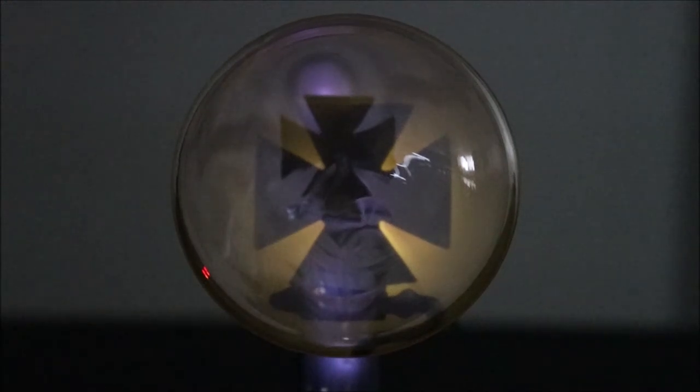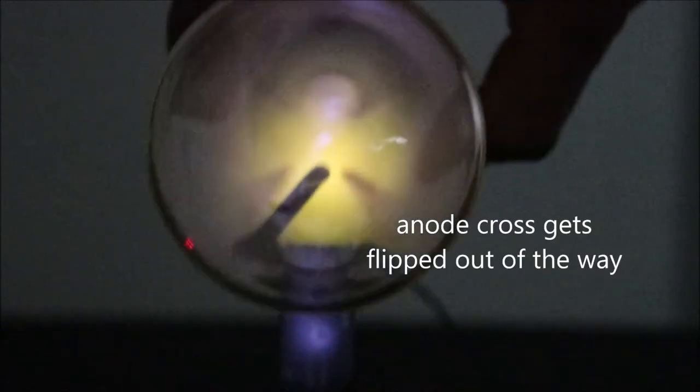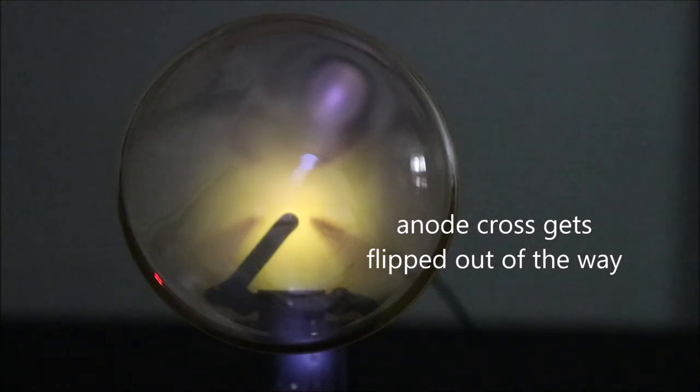Now I can flip the anode out of the way and what happens is we're left with a positive image on the front of the tube rather than the negative image that you can see at the moment and here we go we flip it down and you can see a positive image there.